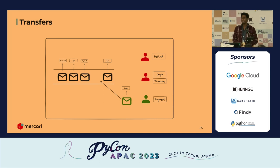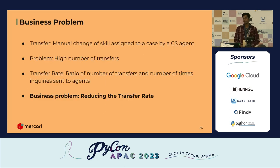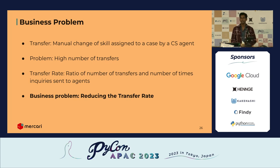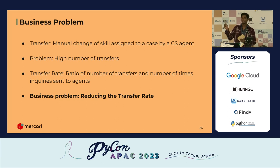We discovered that in our operations we had a large number of transfers. We want to reduce transfers, but the raw number isn't a good metric to optimize because more inquiries means more transfers. So we normalize it into something called transfer rate. For example, if an agent is assigned three inquiries and has to change the skill on one, the transfer rate is one out of three — about 33%. Reducing this transfer rate is our main business problem.